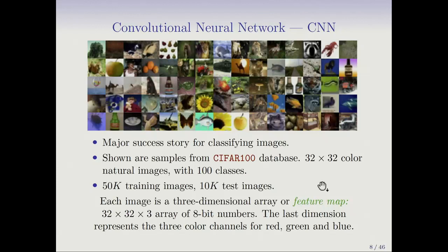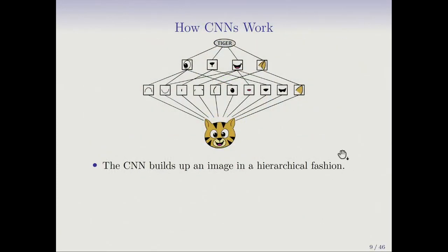Each image here is a three-dimensional array or feature map. That means it's got a red, green, and blue channel. So that's the third dimension. The red, green, and blue channels are images that represent the three different colors. Each of those is going to be 32 by 32.